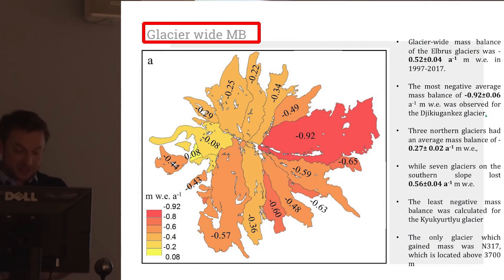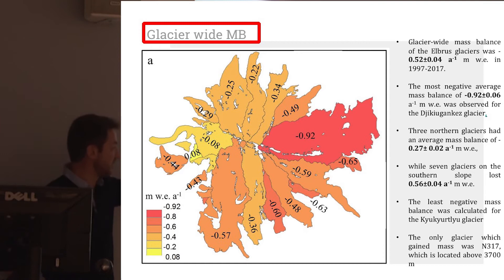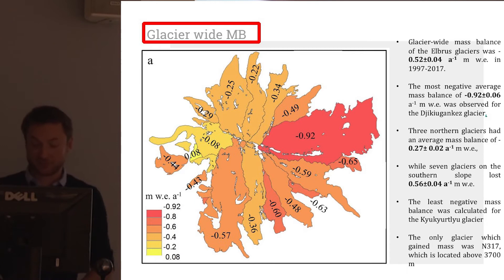Using the elevation difference, we calculated the glacier-wide mass balance for all the glaciers. The most negative mass balance is for the largest glacier — almost one meter of water equivalent per year. Overall, glaciers were losing half a meter of water equivalent per year.